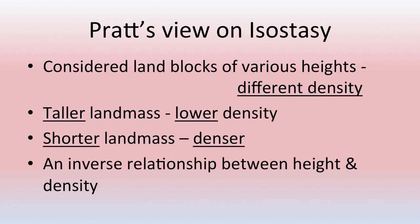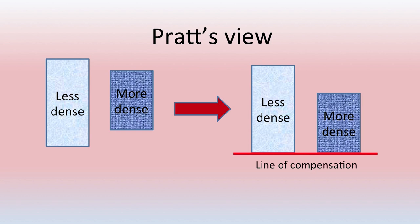Pratt was another geologist who explained isostasy. According to Pratt, he considered land blocks of varying heights with different densities — unlike Airy who assumed the same density. Taller land masses will have lower density while shorter land masses will be denser. So there is an inverse relationship between height and density.